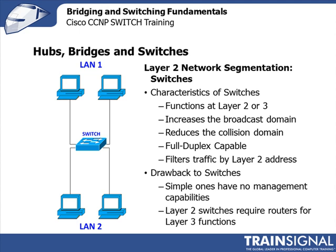For instance, in the switch pictured to the left, let's assume it has five ports. Each one of the workstations plugged into the switch can run at full duplex capability, because they're the only thing on that port and collisions are not possible. And like bridges, switches filter by layer 2 address. As for drawbacks, very simple switches have no management capabilities, and if you're using simply a layer 2 switch, you'll need a router attached to perform inter-VLAN routing and other layer 3 functions. It doesn't decrease broadcasts, but it's a very common device you're going to find in networks.